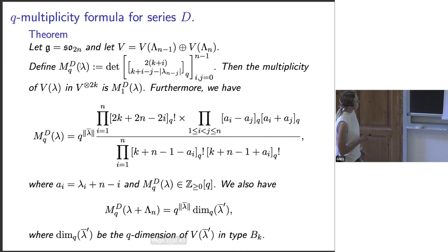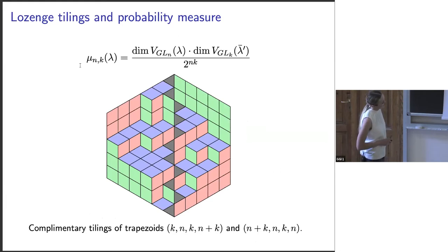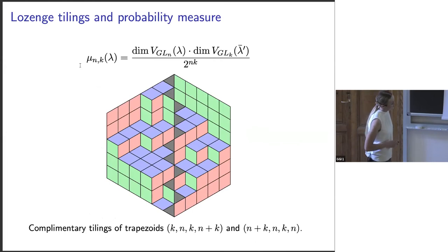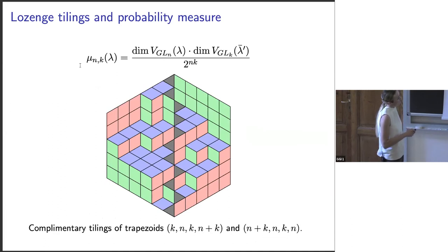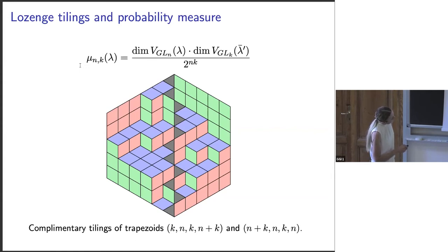The formulas we obtained — not the q-formulas but for all series — give explicit product formulas for multiplicities in tensor power decompositions of the exterior algebra. Now we are ready to do asymptotic analysis. We also have a geometric picture: tilings of the hexagon, tilings of a half-hexagon, and tilings involving triangles. The triangles appear because they correspond to the λ̄' side of the combined diagram.